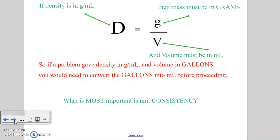So if a problem gives density in grams per milliliter and volume in gallons, for example, you would need to convert gallons into milliliters before proceeding, as we learned how to do in the last chapter.